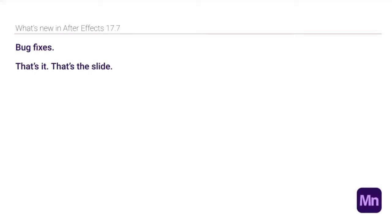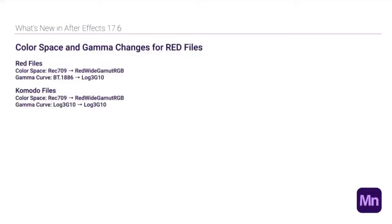Last month we got version 17.6. After Effects is doing a lot of updates now, which is great. Two main changes from a feature perspective: one is that if you work with RED files, some of the color space management has changed. Adobe has a write-up on that. Basically, if you know what these things mean, it might be important to you — if you don't, it probably doesn't matter.